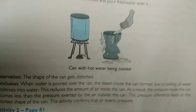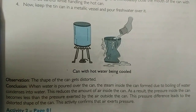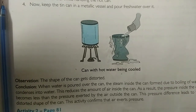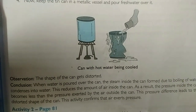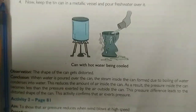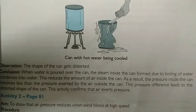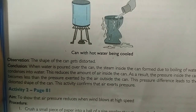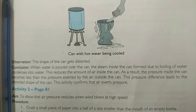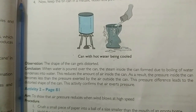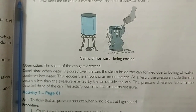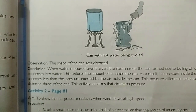This reduces the amount of air inside the can, reducing the pressure inside. As a result, the pressure inside the can becomes less than the pressure exerted by the air outside the can. This pressure difference leads to the distortion of the shape of the can. The reason for the shape change is the pressure difference.